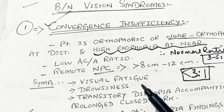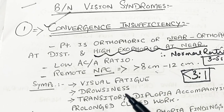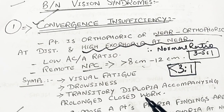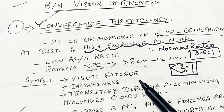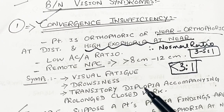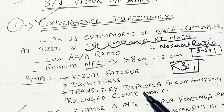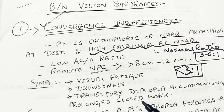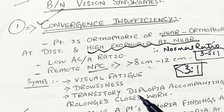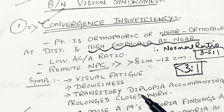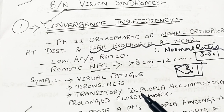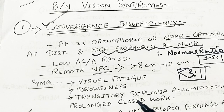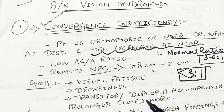Symptoms the patient experiences include visual fatigue, drowsiness, and transitory diplopia accompanying prolonged close work. The patient has asthenopic symptoms and especially diplopic symptoms — double vision especially when doing near work or computer work — along with constant headache especially while working at near.